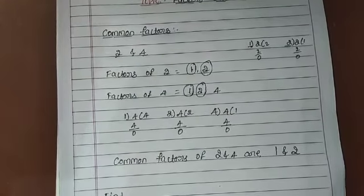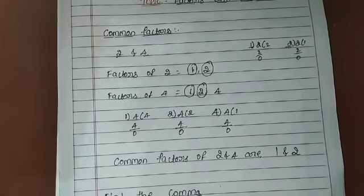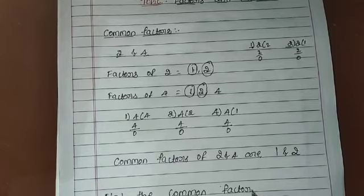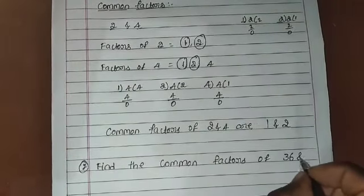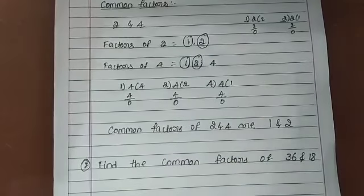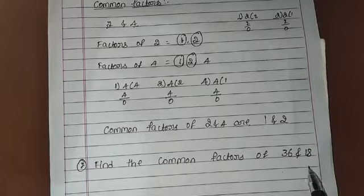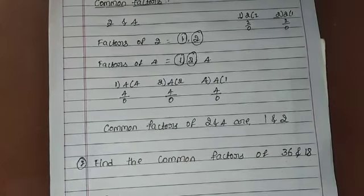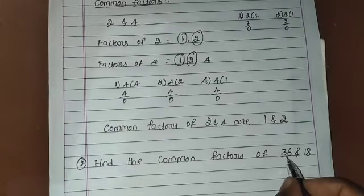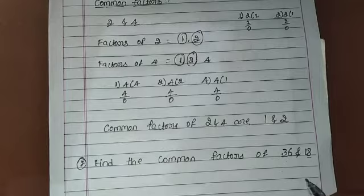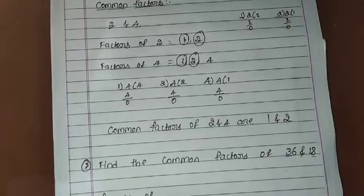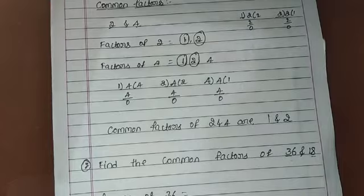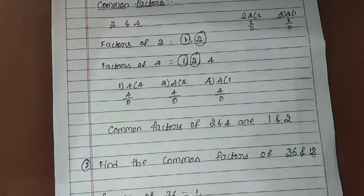The second example: find the common factors of 36 and 18. To find the common factors, we first find the factors of 36 and then the factors of 18. We know that 1 is a factor of every non-zero number, so 1 divides 36 thirty-six times.